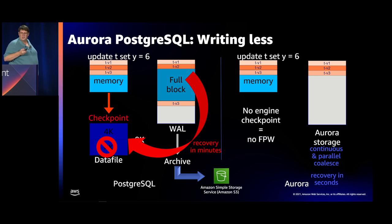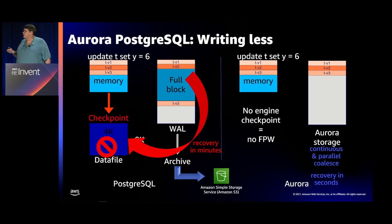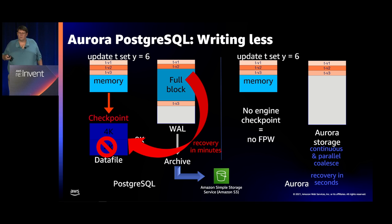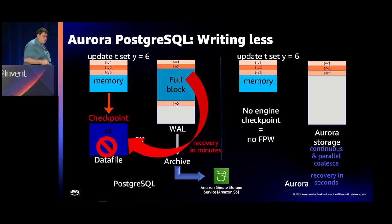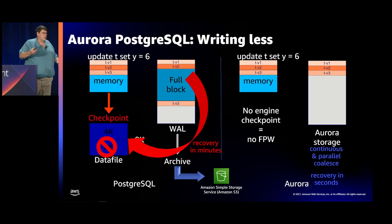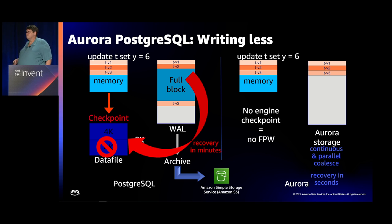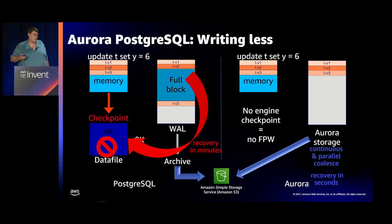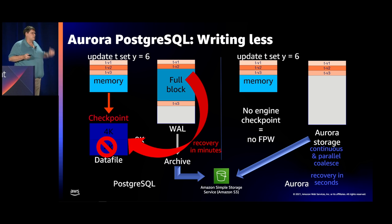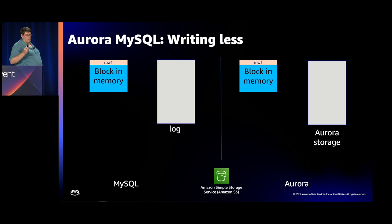What's happening behind the scenes is we're continuously performing recovery in the storage fleet. When you recover with Aurora, you can recover significantly faster because we've already been doing recovery all along. When you restart the database and say catch me up, it's very quick. At all times, we're also hardening all those log record changes into S3.